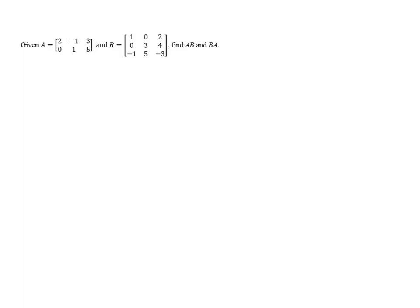Given A, the 2 by 3 matrix with entries 2, negative 1, 3, 0, 1, and 5, and B, the 3 by 3 matrix with entries 1, 0, 2, 0, 3, 4, negative 1, 5, and negative 3, find AB and BA.